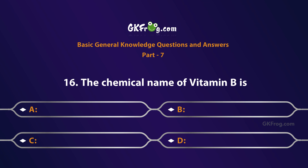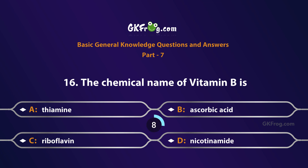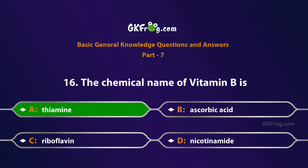The chemical name of Vitamin B is: A. Thiamine, B. Ascorbic acid, C. Riboflavin, D. Nicotinamide. Correct answer is A. Thiamine.